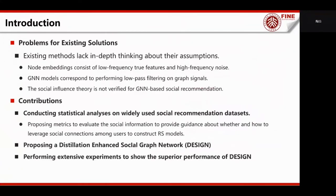Nevertheless, we argue that existing methods lack in-depth thinking about their assumptions. As illustrated by some recent works, learned embeddings consist of low-frequency true features and high-frequency noises, and GNN models correspond to performing low-pass filtering on graph signals. However, before performing graph convolution on graph structures, the social influence theory is not well studied for GNN-based social recommendation scenarios.